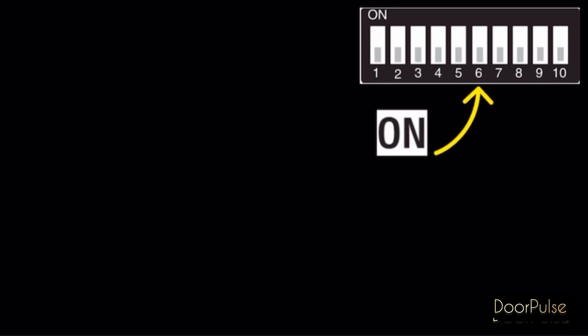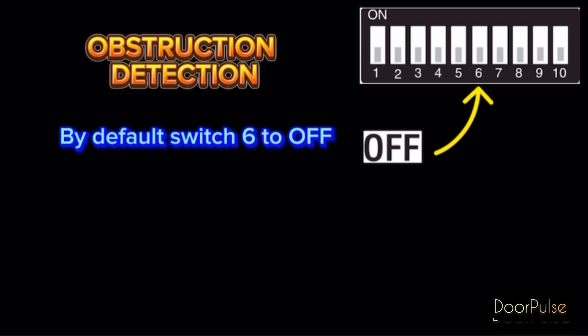Switch 6 on, obstruction detection when motor is idle mode. By default switch 6 to off to deactivate it.